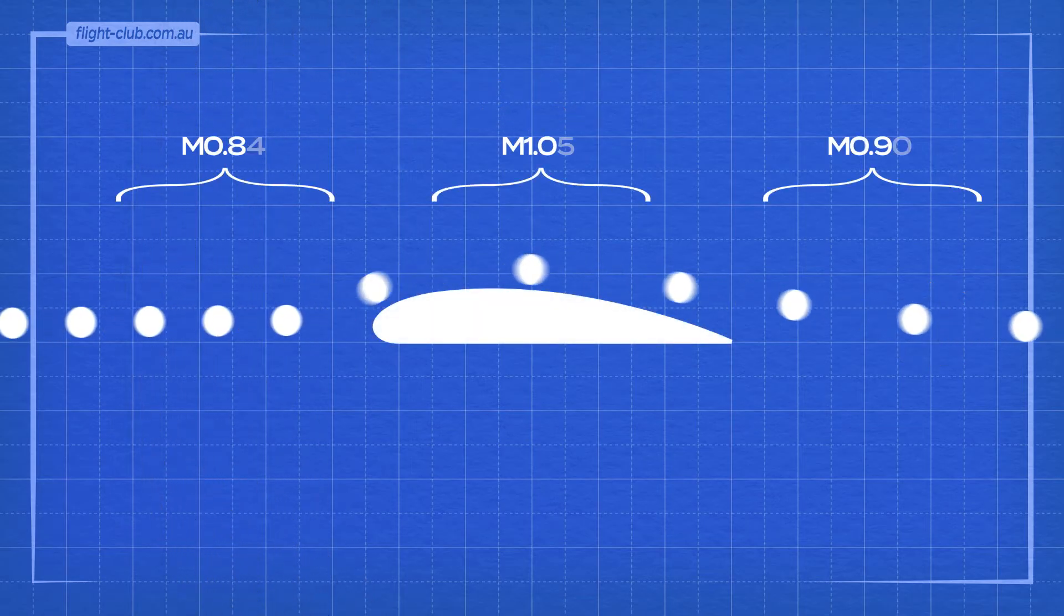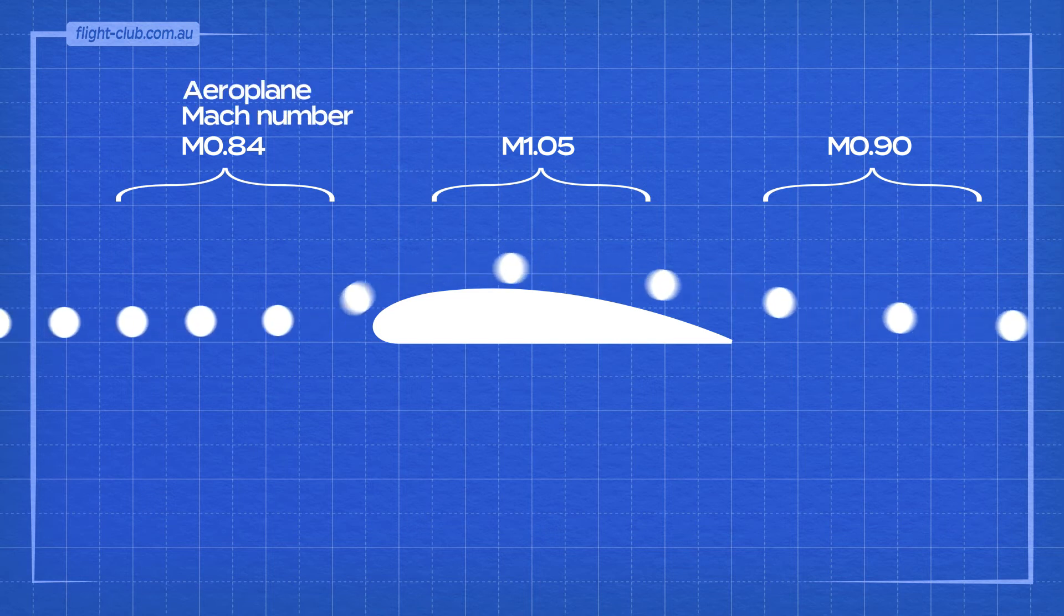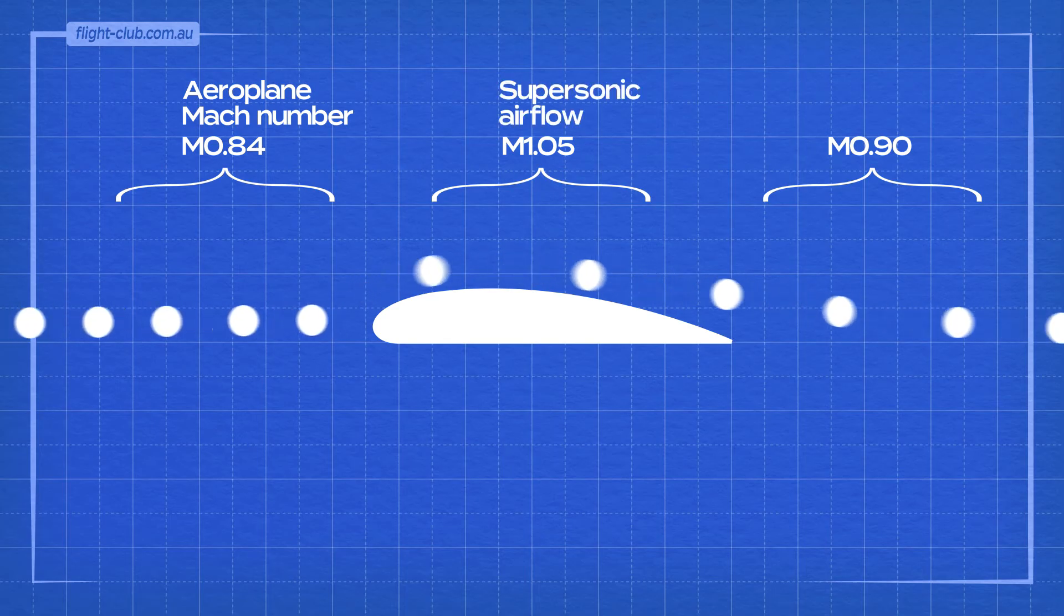Airflow around a cambered wing is accelerated above the upper surface. So if, for example, the Mach number of the aeroplane is 0.84, above the wing the flow may be supersonic. That is, higher than Mach 1.